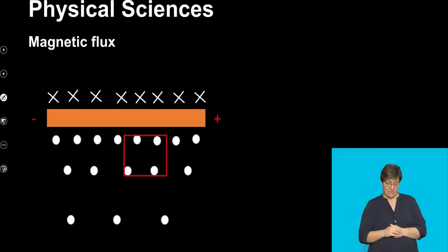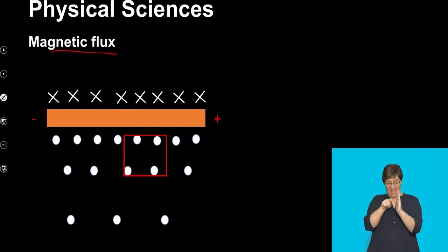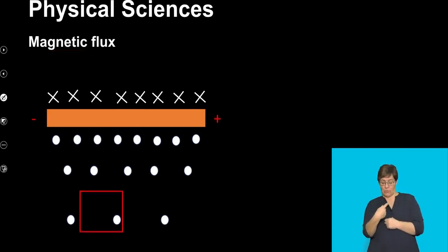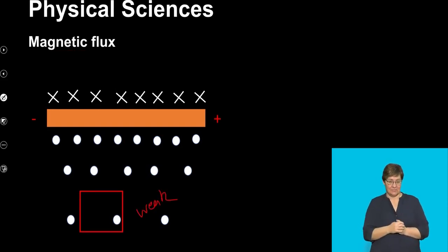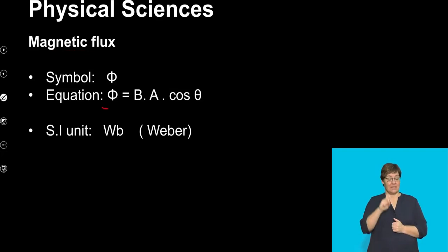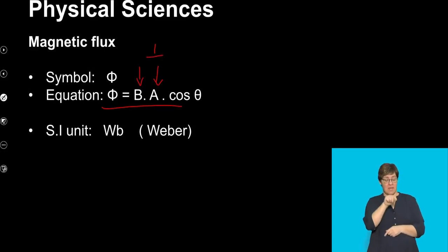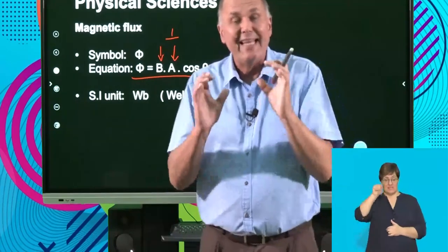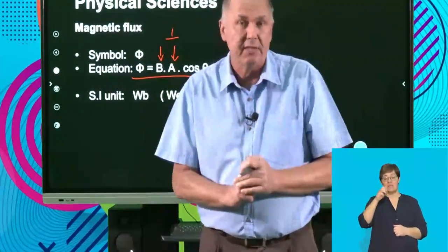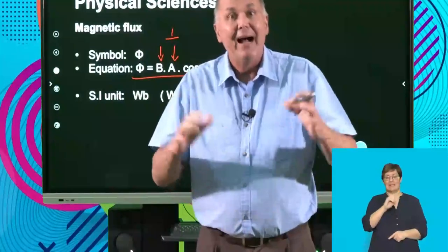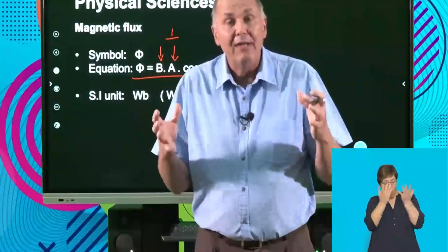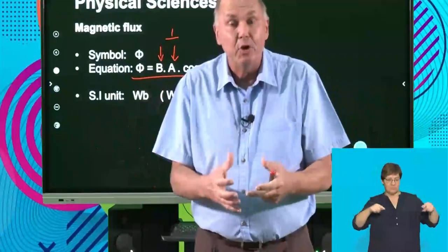Magnetic flux is related to the strength of the field and the area. Over here you've got lots of field lines passing through an area; the same area with fewer field lines would be weak. Magnetic flux is the combination of field intensity and area, but remember these two are at 90 degrees — perpendicular to each other — and we use the angle theta to correct if they're not at 90 degrees. This gives us a good overall summary of the ideas of electromagnetism.